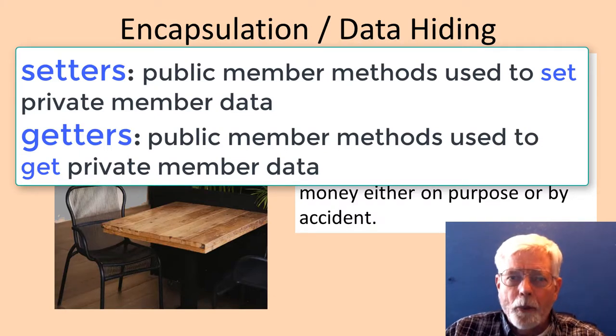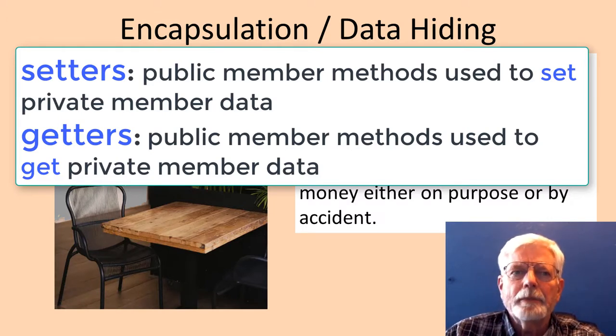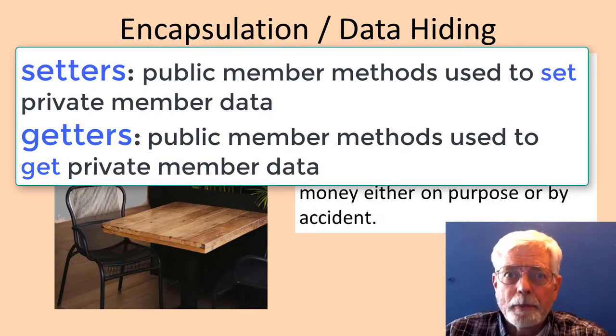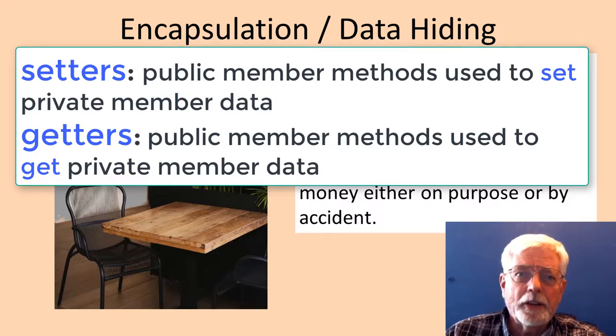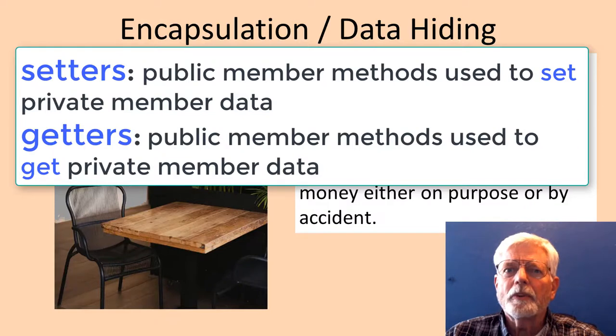If I were to develop a weekly payroll program, I could define a class for a timesheet that contained variables for hours worked and pay rate. Instead of making these variables public, I can make them private and provide public access methods to either set or get the data. Methods that place data into the private variables are commonly referred to as setters or mutators.